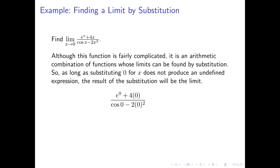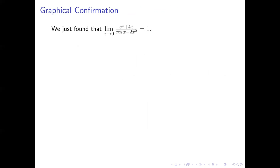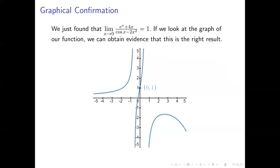Here's what we get when we do our substitution. e to the power 0 is 1, 4 times 0 is 0, the cosine of 0 is 1, and 2 times 0 squared is 0 — so the whole thing works out to 1. We didn't end up with anything undefined, so we can conclude that the value of that limit is equal to 1. We can quickly confirm this using a graph of y equals e to the power x plus 4x over cosine of x minus 2x squared. As we move closer and closer to where x equals 0, the y coordinates are getting closer and closer to 1, confirming our result.